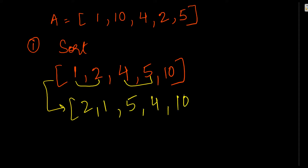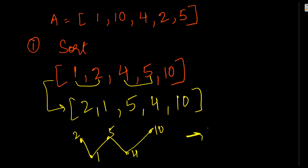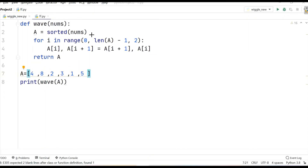After sorting, I swap adjacent pairs so I get 2, 1, 5, 4, 10. If I plot this — 2, then 1, then 5, then 4, then 10 — it is making a wave. So basically, a wave is something where all odd-index elements are greater than even-index elements.